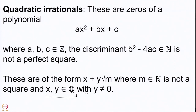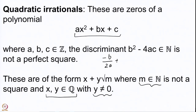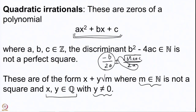These quadratic irrationals are always of the form x + y√m, where x and y are rational numbers, y is non-zero, and m is a natural number that is not a perfect square. The solutions (−b ± √(b²−4ac))/(2a) are exactly of this form with x = −b/(2a) and the square-root part providing y√m.